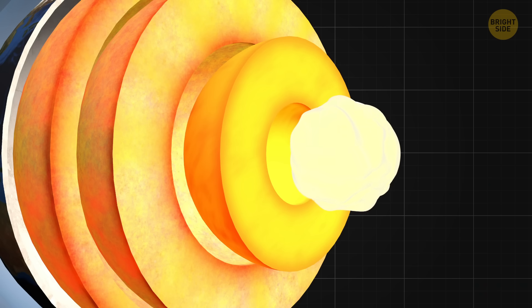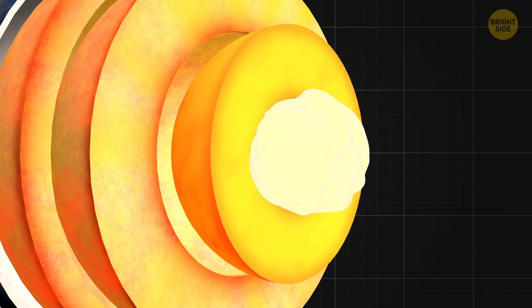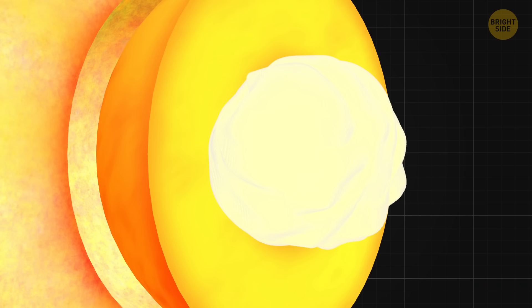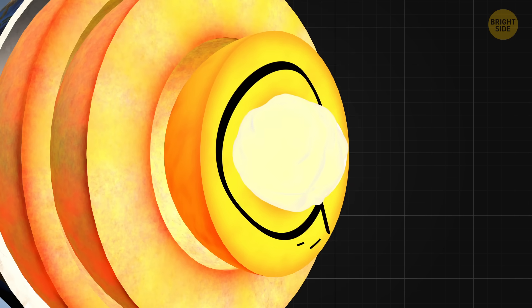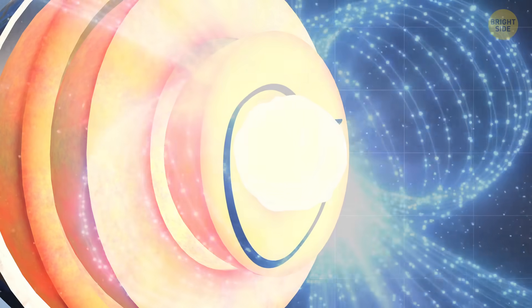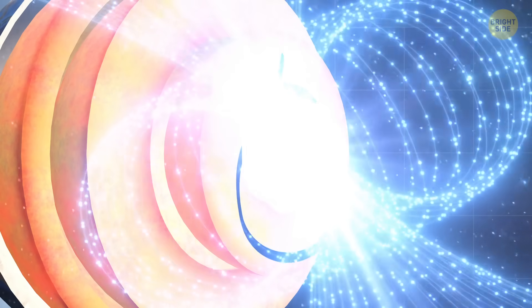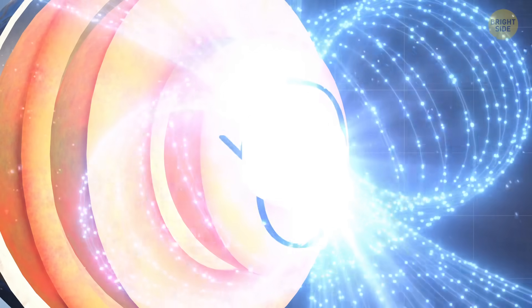So why is our planet's inner core deforming? It seems to happen where the solid inner core meets the super-hot liquid outer core. The molten metal flows around it, and combined with the tug of an uneven gravity field, likely warps its edges.